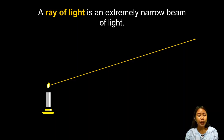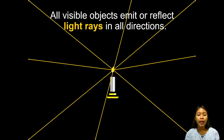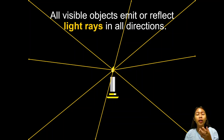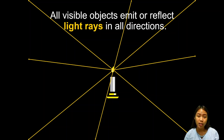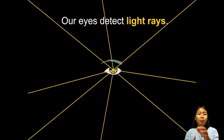We have a candle and a single light ray, but always remember that a source of light does not emit just a single light ray — it emits light rays in all directions. Just like when you turn on a flashlight, light rays spread out from it in the direction it's pointed. Light rays go out from the source of light.